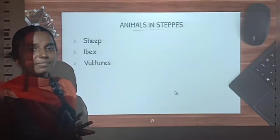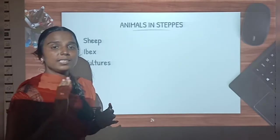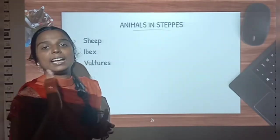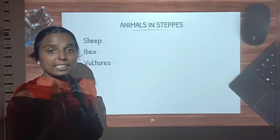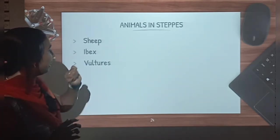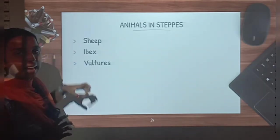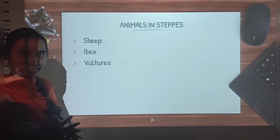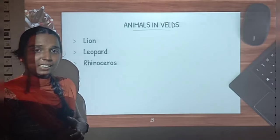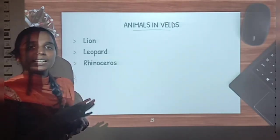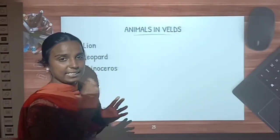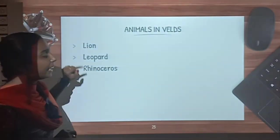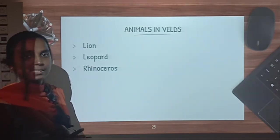Now let us see what animals we can find in the steppes. Steppes are the grasslands located in Russia. So what animals can we see in the steppes of Russia? Sheep, ibex and vultures. And what are the animals we can see in the veld of South Africa? Lion, leopard and rhinoceros.